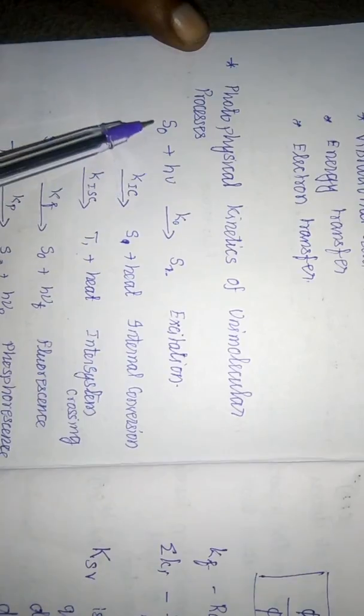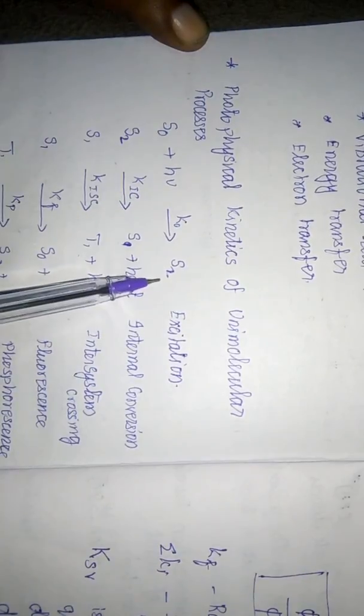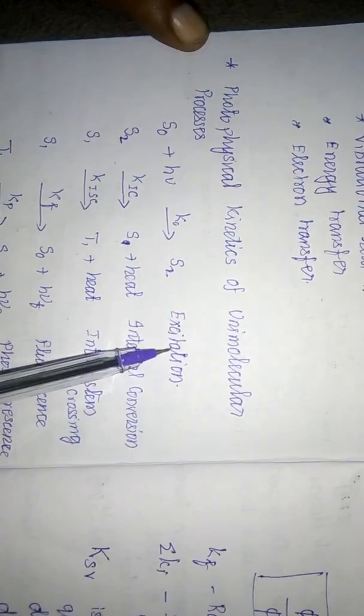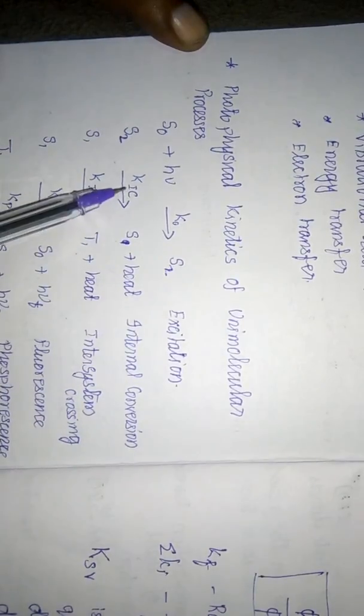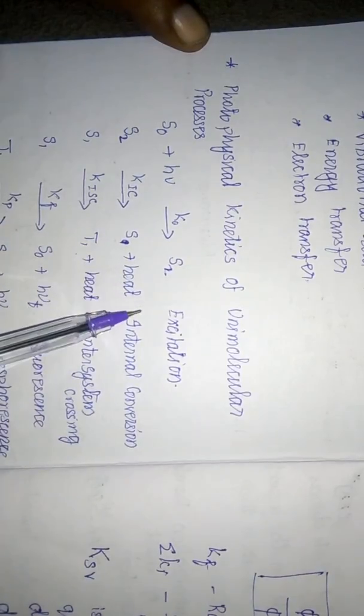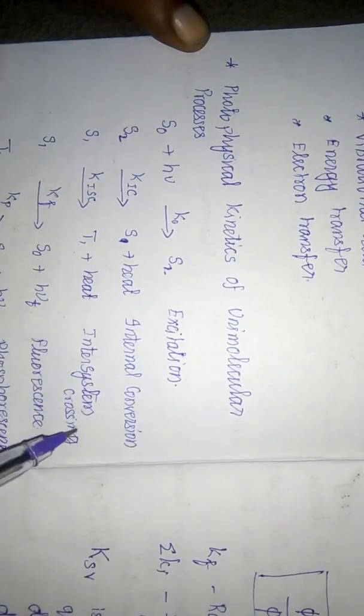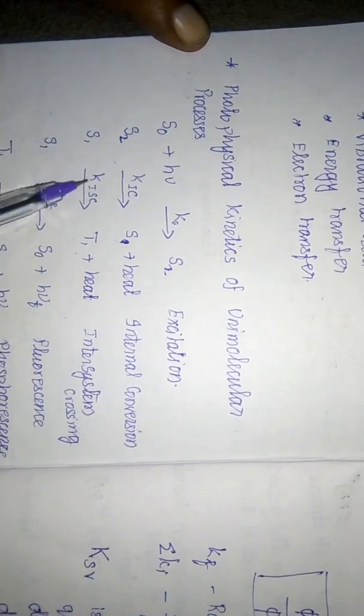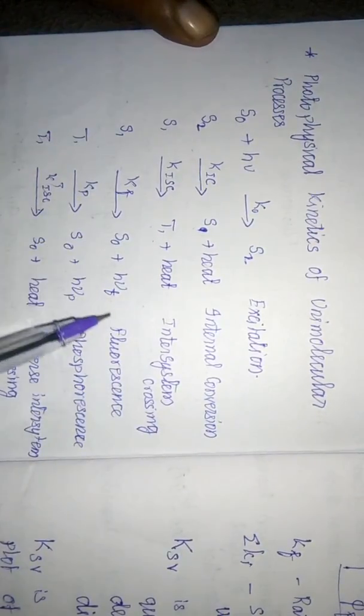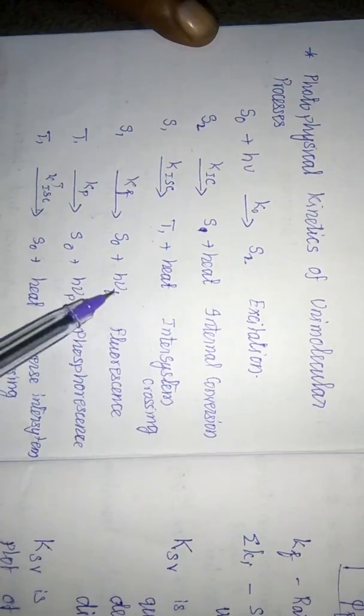The overall process is explained as photochemical kinetics of unimolecular processes. From the absorption of photons, it moves from the ground singlet electronic level to the S2 state during excitation. From S2, during internal conversion, it moves to the S1 state and the extra energy is emitted as heat. From S1, during inter-system crossing, it moves to the T1 state and the extra energy is dissipated as heat. In the fluorescence process, from S1 it moves to S0 and the extra energy is emitted as fluorescence.